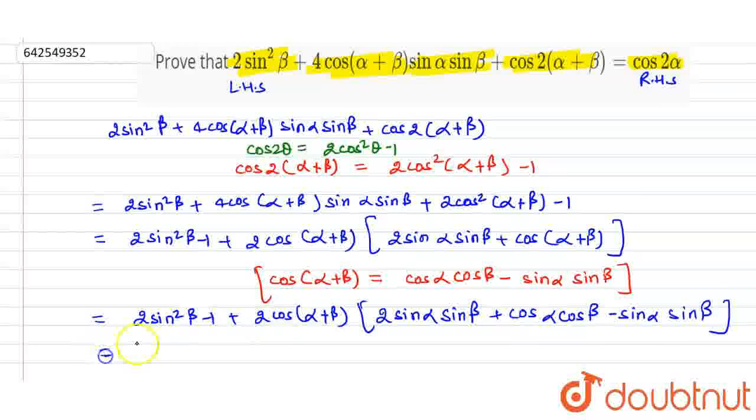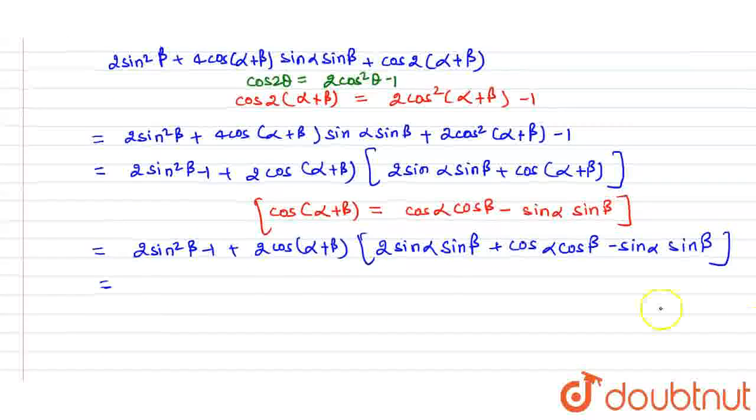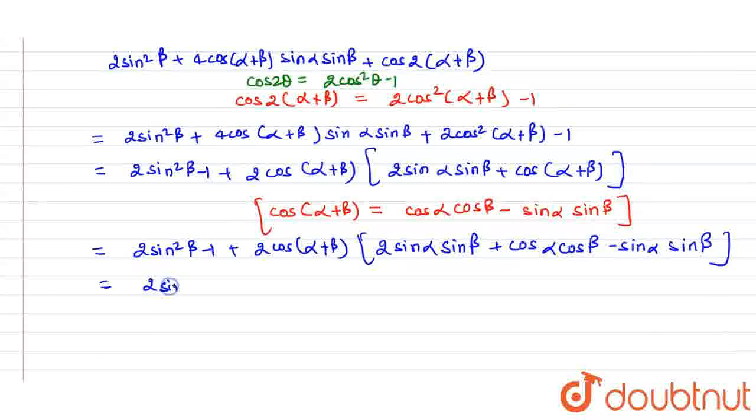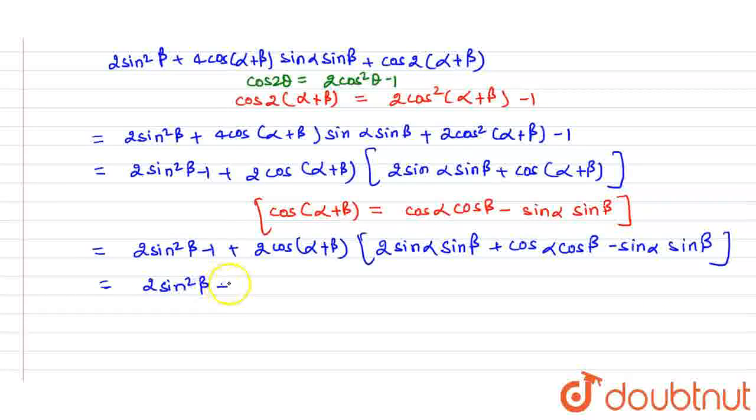On simplifying further, we get 2sin²β - 1 + 2cos(α+β)[cosαcosβ + sinαsinβ].